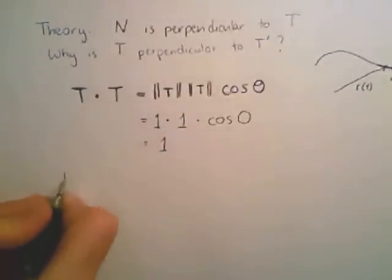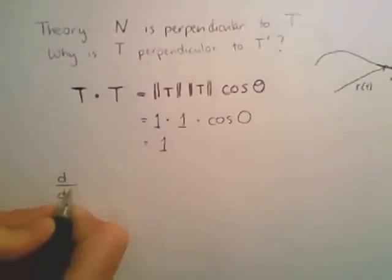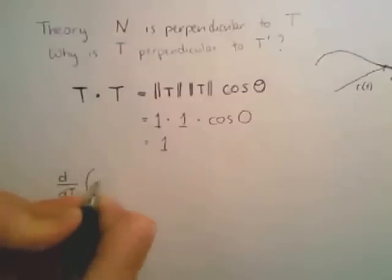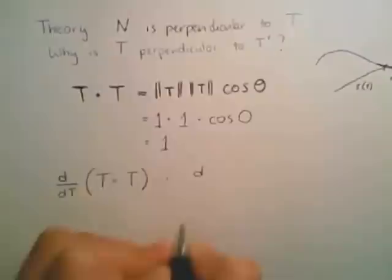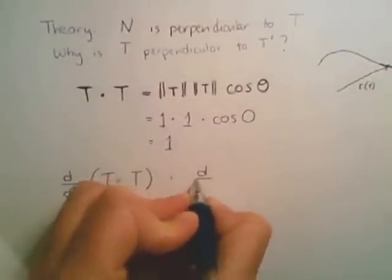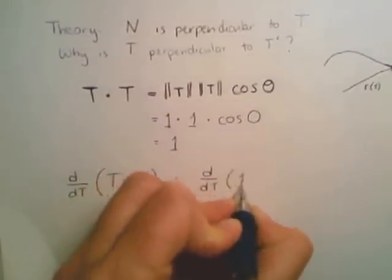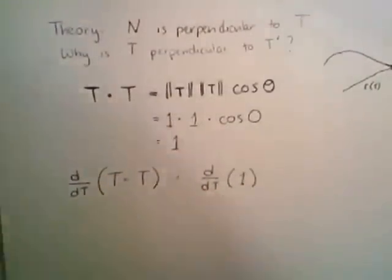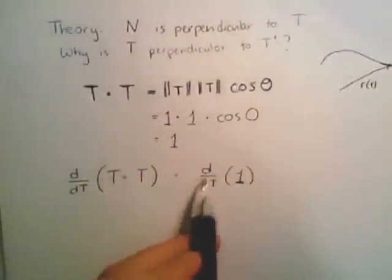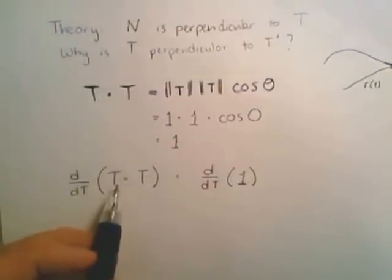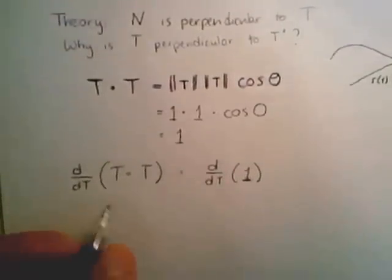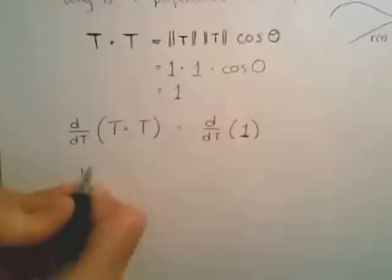Now let's look at, again, sort of a crazy thing. Let's take the derivative of both sides. So I'm going to take the derivative with respect to t of T dot T, and the derivative of 1 with respect to t. Well, this side is easy. This is the number 1. What's the derivative of 1? It's just 0. What's the derivative of a dot product? It's actually, like multiplication, we have to use product rule.